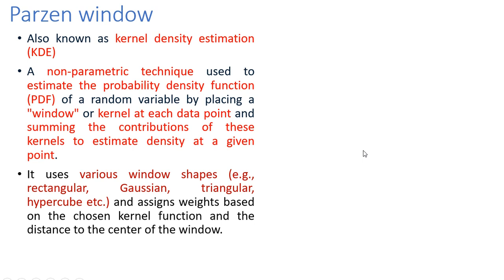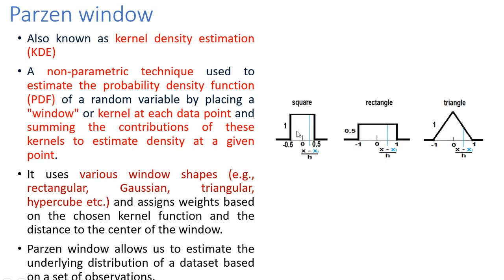Different types of window shapes can be used like Gaussian, triangular, hypercube, square, rectangle, etc. These are the different kinds of windows that you can use. Finally, what is done in this approach is you assign weights based upon the chosen kernel function. The kernel functions can be Gaussian, rectangle, or triangle, and depending upon what your kernel function is you assign weights and then you sum up the contributions of all these kernels to estimate the density at a given point. Parzen Window basically allows us to estimate the underlying distribution of a dataset based upon a set of observations.